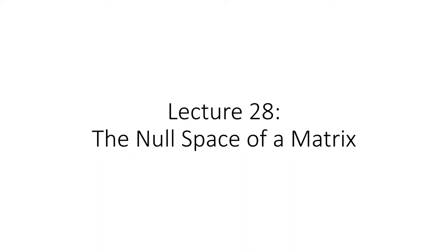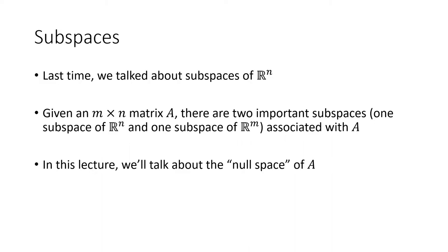In this lecture we'll be talking about the null space of a matrix. Last time we talked about subspaces of Rn, but given an m by n matrix A, there are actually two important subspaces we're interested in. One of them is going to be a subspace of Rn, matching the number of columns of the matrix A, and one of them is going to be a subspace of Rm, matching the number of rows of A.